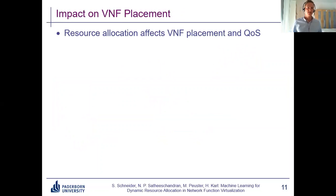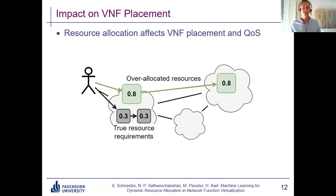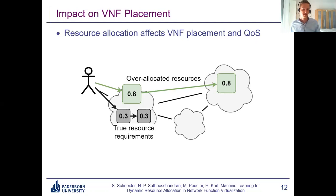One more thing to highlight: over-allocation — allocating too many resources — not only wastes money, it may also affect VNF placement and quality of service. For example, if we have one user with a service of two VNFs, each needing only 30% CPU, we could fit them both on the same node close to the user. But if we instead use fixed allocation at 80% CPU for each VNF, we can no longer fit them both on the same node, so we must place the second VNF farther away, introducing additional path delay, higher end-to-end delay, worse quality of service, and unhappier users. Even with more resources allocated, we might still get worse service quality.